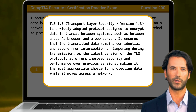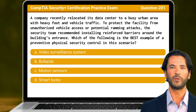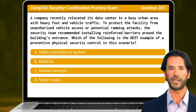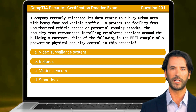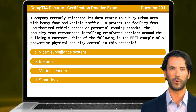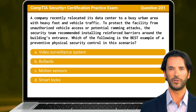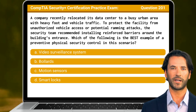Wow, you have completed 200 questions. How about one more question as a reward for your hard work? Question 201. A company recently relocated its data center to a busy urban area with heavy foot and vehicle traffic. To protect the facility from unauthorized vehicle access or potential ramming attacks, the security team recommended installing reinforced barriers around the building's entrance. Which of the following is the best example of a preventive physical security control in this scenario?